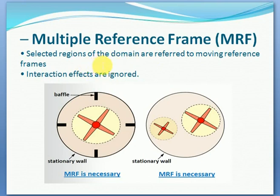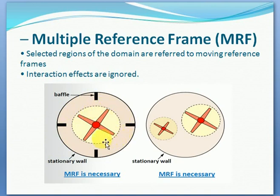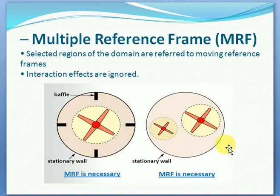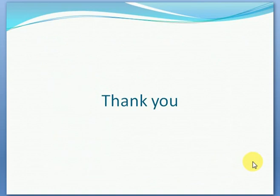The second approach is Multiple Reference Frame, or MRF, where selected regions of the domain are referred to a moving reference frame. Interaction effects are ignored in MRF. As shown in the figures, when stationary wall baffles are attached and blades are rotating — or when blades rotate about two axes of rotation — MRF is necessary to specify the problem correctly.